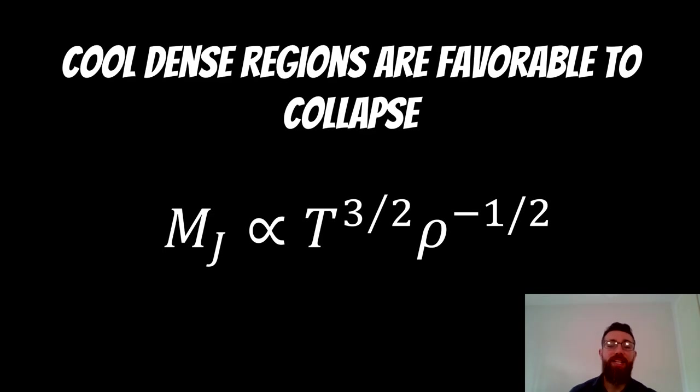And as you increase the density, then the Jeans mass also decreases as well. So it just tells you that cool dense regions are going to be favorable to collapse.